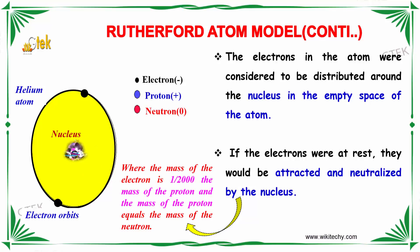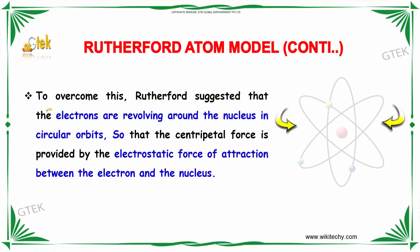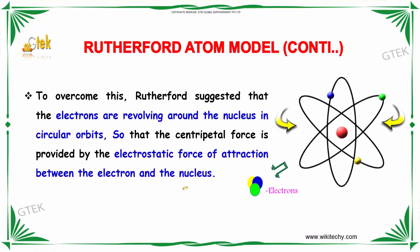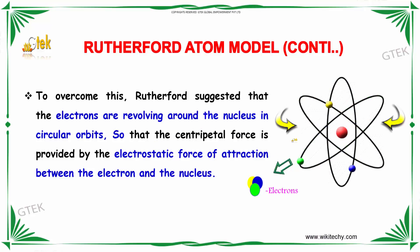If the electrons were at rest, they would be attracted and neutralized by the nucleus. To overcome this, the electrons revolve around the nucleus in orbits. I am trying to show a typical example of a helium atom, which has two electrons in it. Rutherford suggested that the electrons are revolving around the nucleus in circular orbits, so that the centripetal force is provided by the electrostatic force of attraction between the electron and the nucleus.